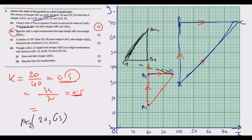Part D: triangle A1B1C1 is mapped onto triangle A3B3C3 by a single transformation, with vertices A3(40,15), B3(40,35), and C3(70,35). We plot A3 at (40,15), B3 at (40,35), and C3 at (70,35), then draw the lines to form triangle A3B3C3.